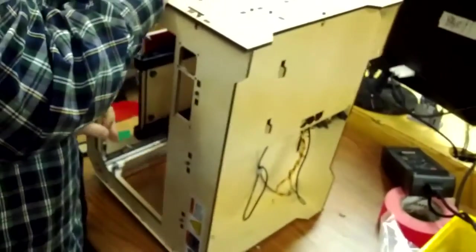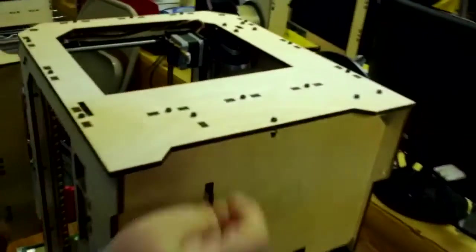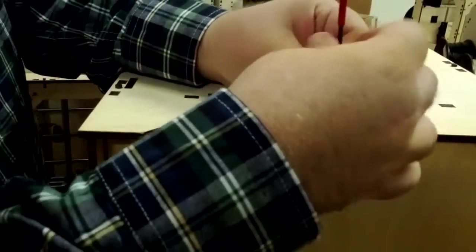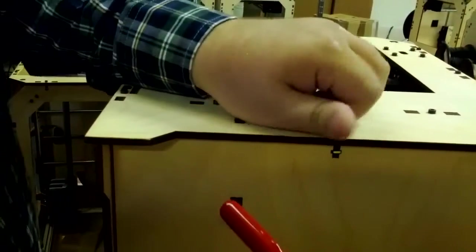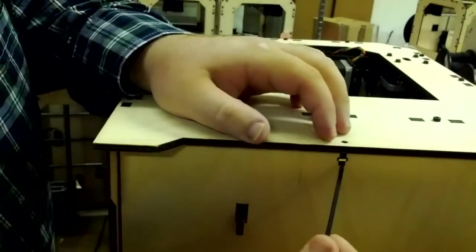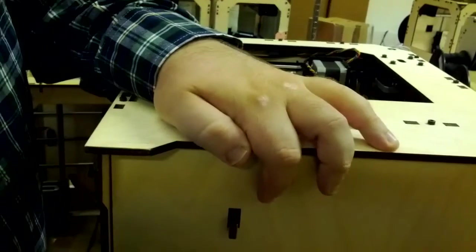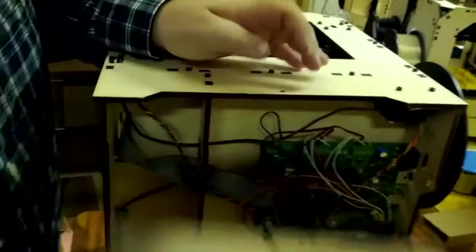Now you're going to take the bot, put it on its left side, and remove the one bolt holding the bottom panel in place.